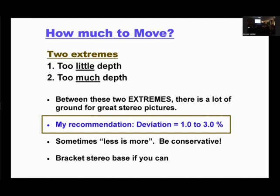How much to move? There are two ways you can mess up — you move too much or not enough. Between those extremes, a lot of situations will work and you don't have to find the optimum. But the general recommendation is deviations between 1% and 3%. The 3% is the maximum, not necessarily optimum — I advise being conservative, aiming around 2%, because when you crop later you generally increase the deviation. If you're not sure, you can always take more than one pair with different stereo bases and bracket it.